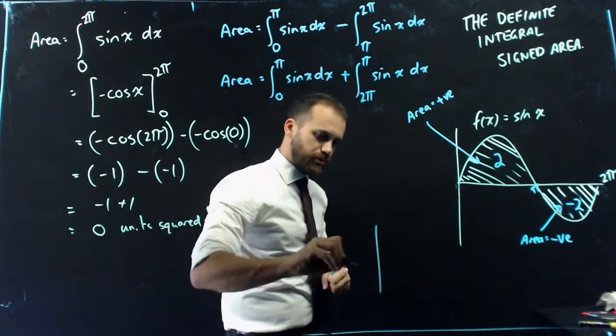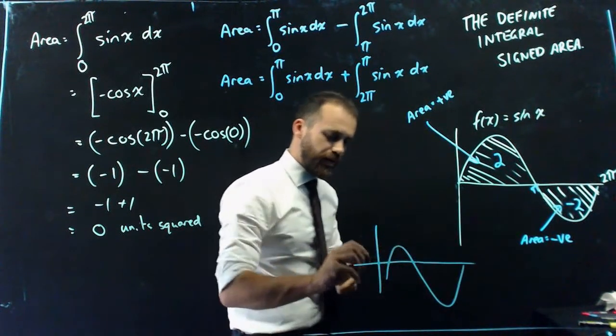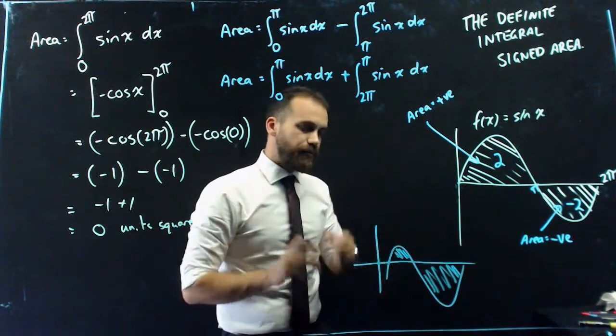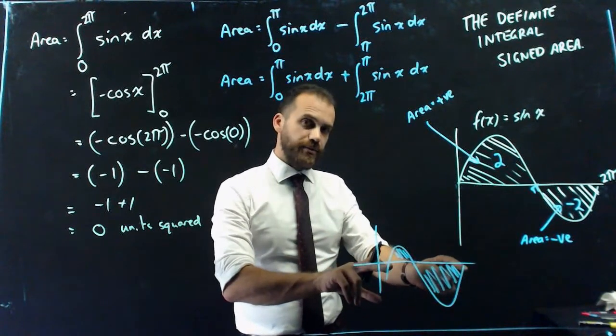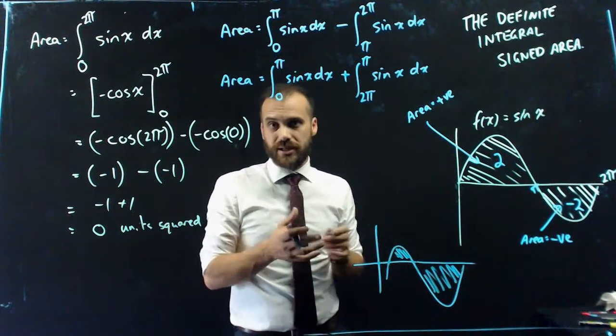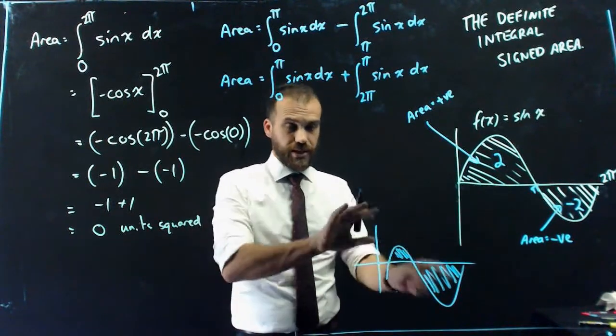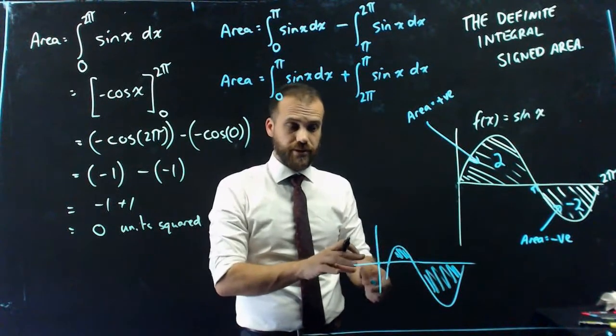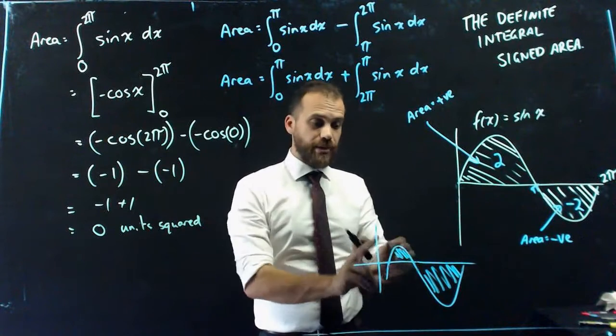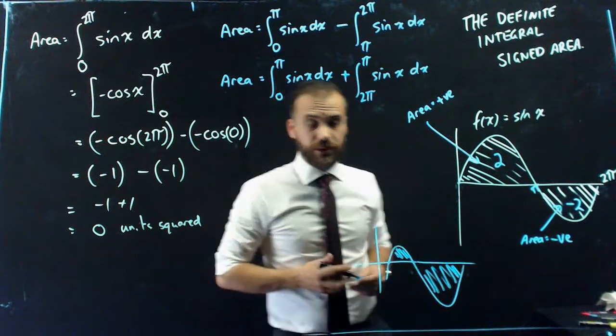But if you had a function that looked more like that, and you were finding this and this, if you took the definite integral from here to here, you can see that there's more stuff on the bottom than there is on the top. So you'd get a negative answer. The negative answer would be less than if you'd added this number to this number because they're canceling each other out in some way. So if there is some above and some below, you've got no choice, you've got to split them up. Let's do the bit that's above the curve, let's do the bit that's below the curve.